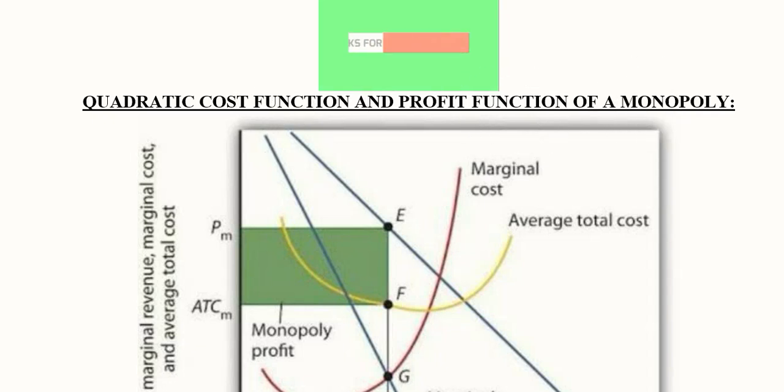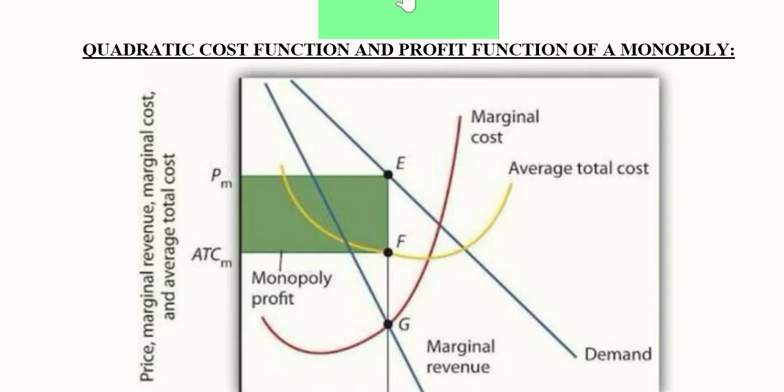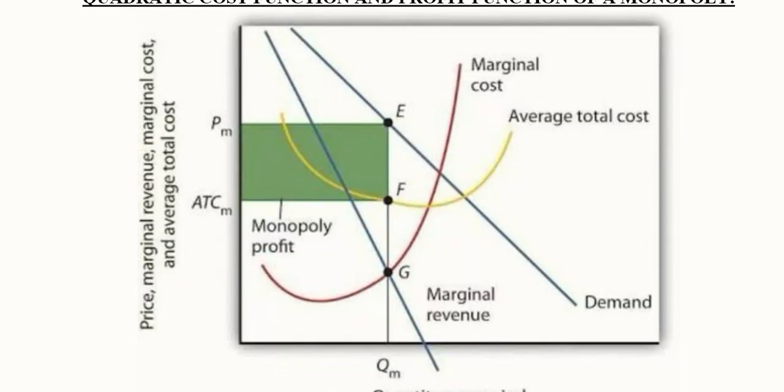Just as a reminder, this is the diagram of a monopoly's equilibrium. Here on the x-axis we have the output, and this Qm is the equilibrium output. We have price, marginal revenue, marginal cost, and average cost variables on the y-axis.